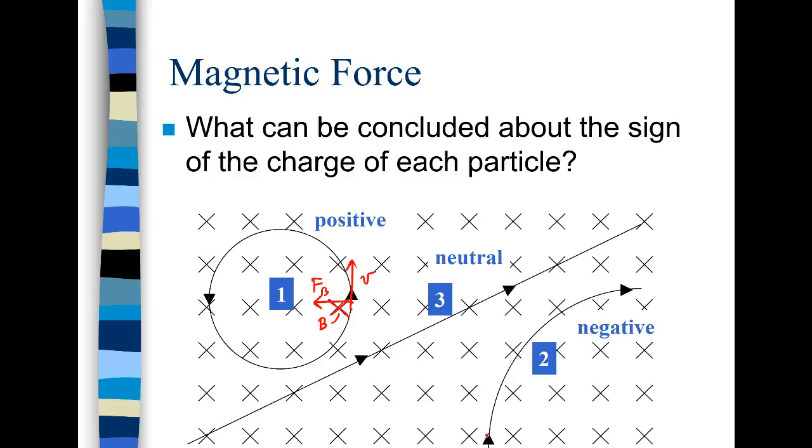The negative one is the opposite. You have v going up, but you have B into the page. And if you do that, you're going to have a force which is going out. But that can't be right, because the path is this way. So you know that you need a negative sign to make that correct. And then 3 is neutral because the path isn't changing, so there is no force on it.